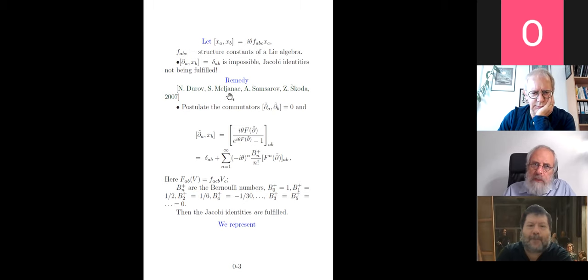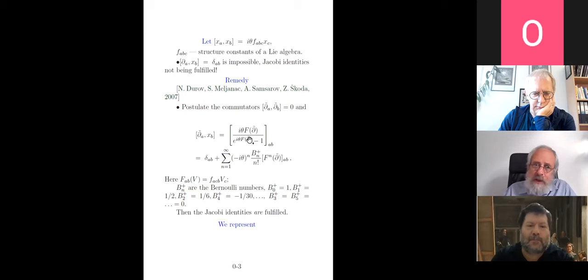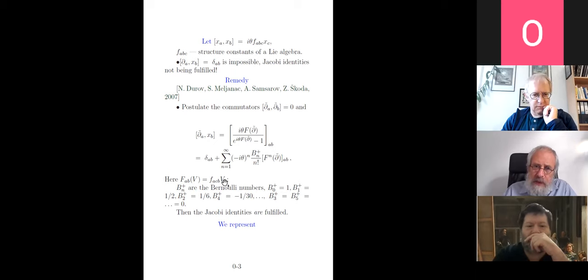About 15 years ago, people understood that the algebra can be closed with this basic commutator if you introduce a generalized derivative D̃, not a usual derivative. The commutator of D̃ with coordinates is complicated — it's an infinite series over derivatives. This is a matrix carrying indices a and b, and if you expand it, you obtain a series with coefficients that are Bernoulli numbers.